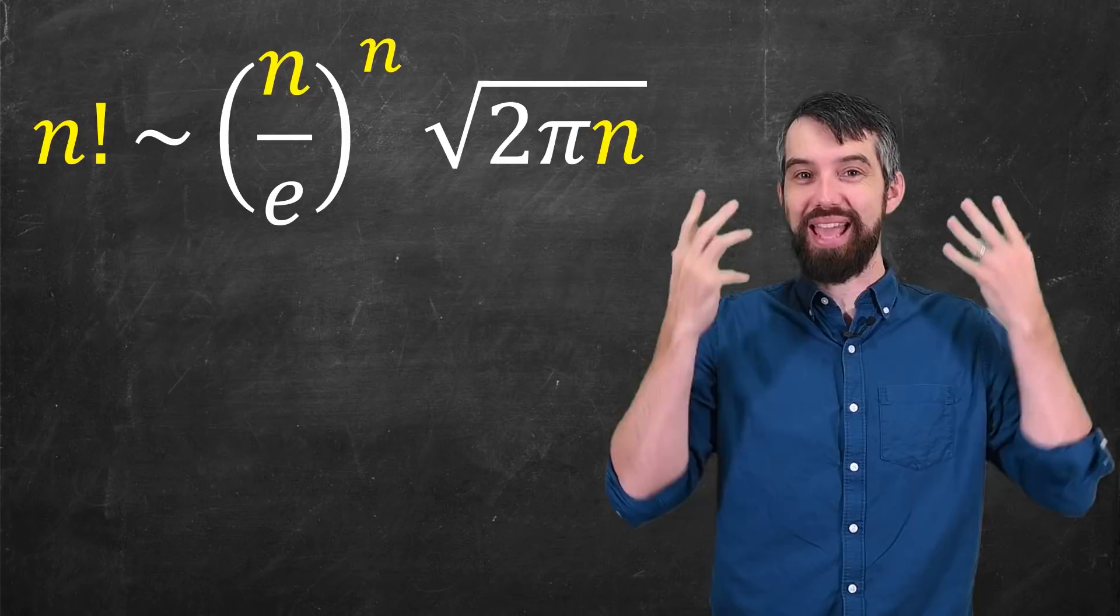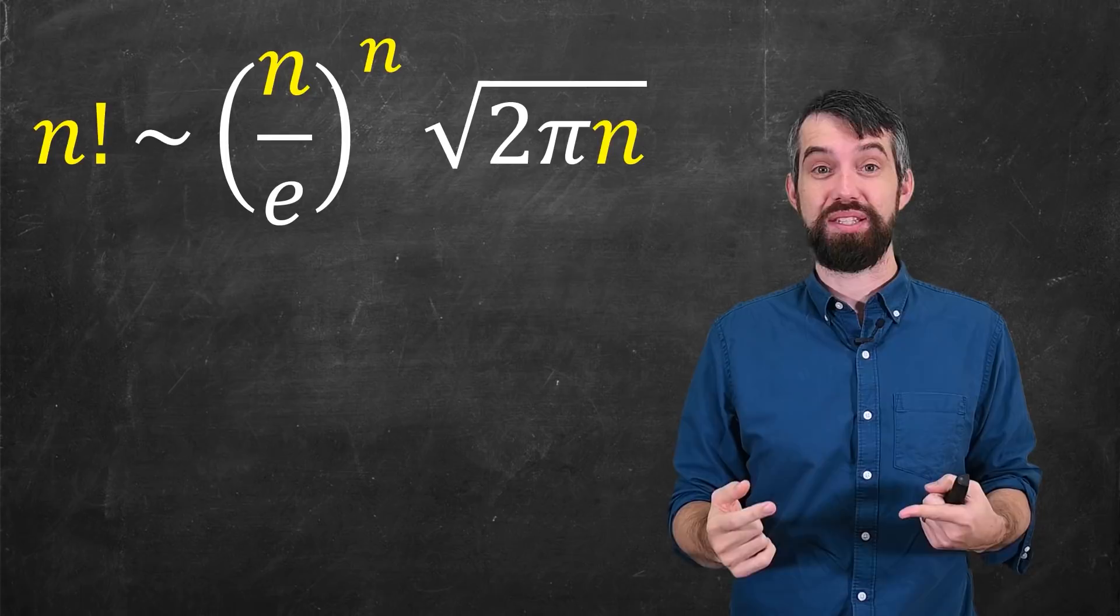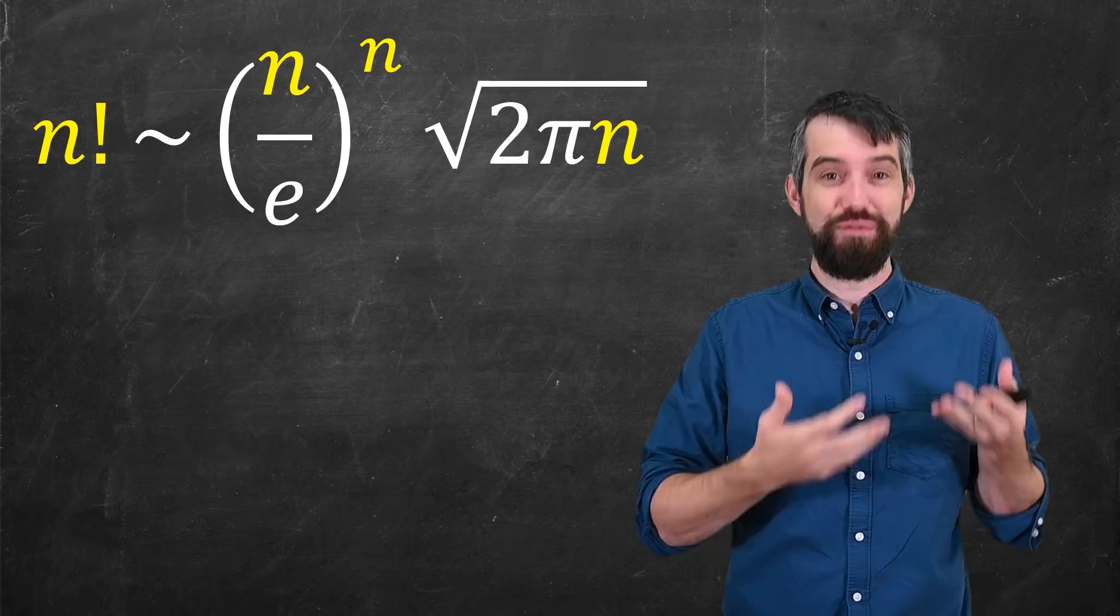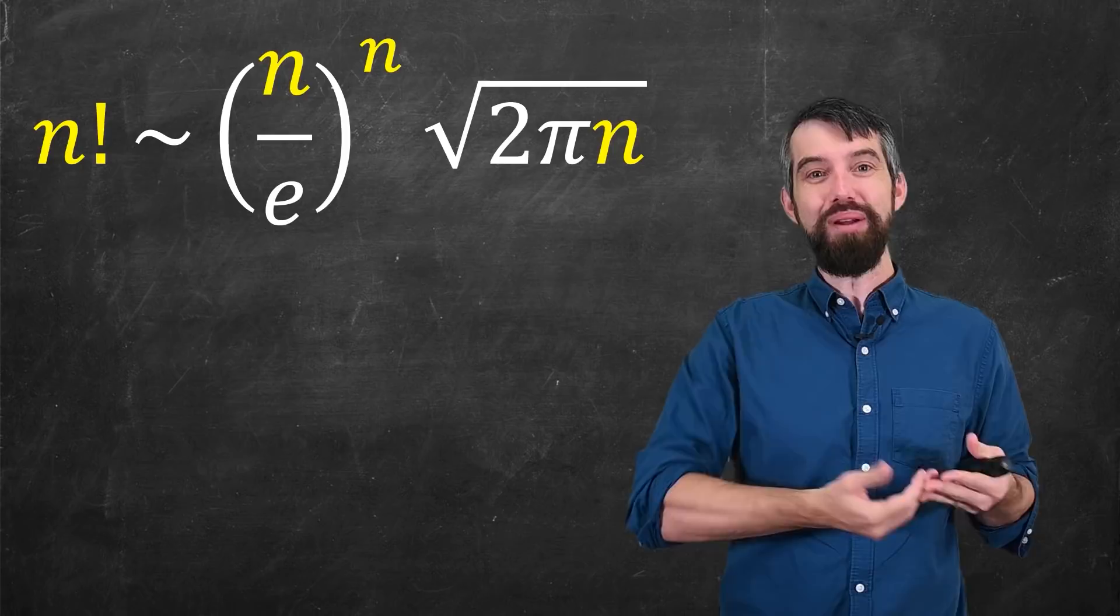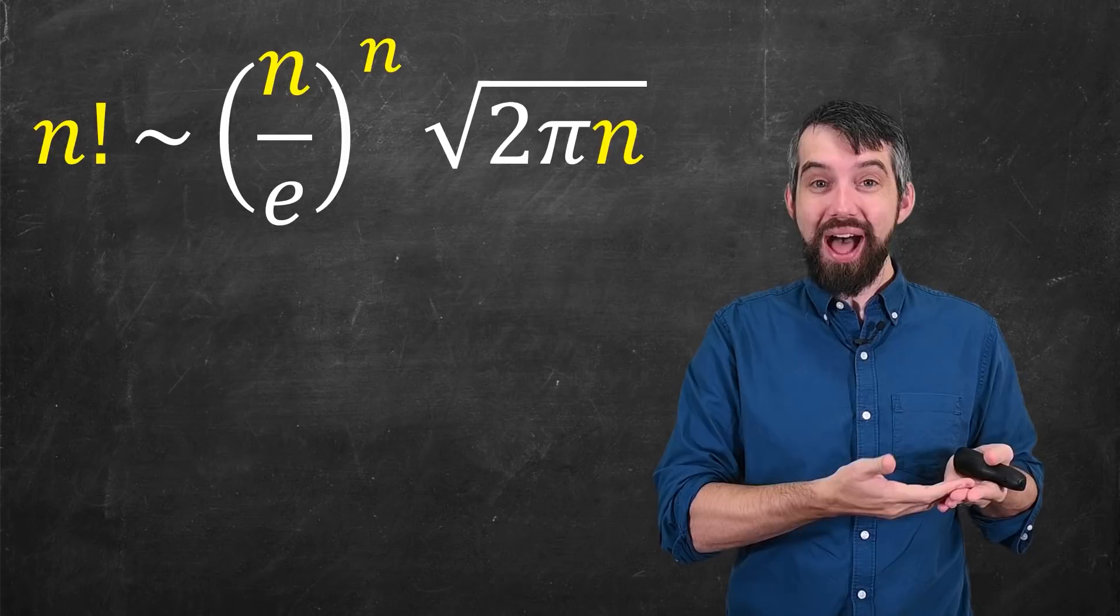And it's almost unbelievable that a formula like this could exist, because when I think about factorials, like 5 factorial is 5 times 4 times 3 times 2 times 1, in other words 120, it's this very discrete thing because you're inputting natural numbers like 5 and you get outputs like 5 factorial is 120.